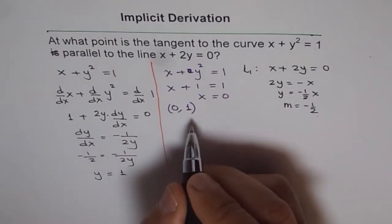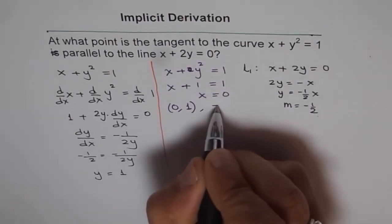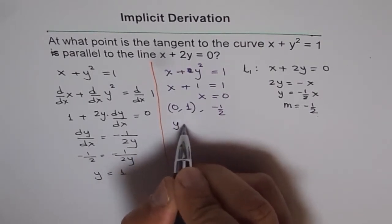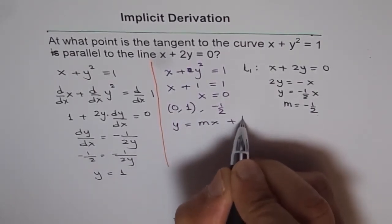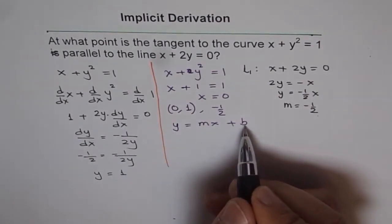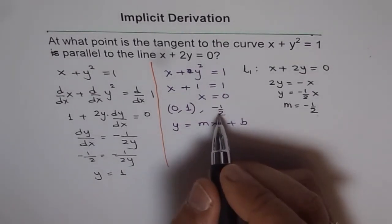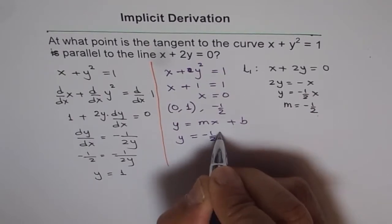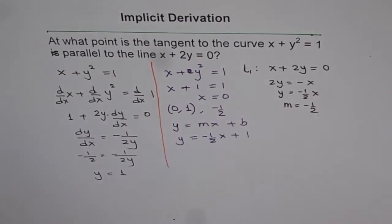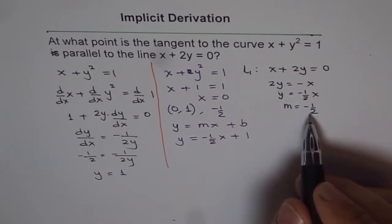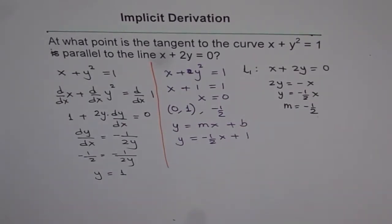Now the slope of the line is minus half, and therefore the equation of the tangent line will be y equals mx plus b. Substituting the point (0, 1), the y-intercept is 1 and the slope is minus half. So we get the equation y equals minus half x plus 1. That is the equation of the tangent line at that point.